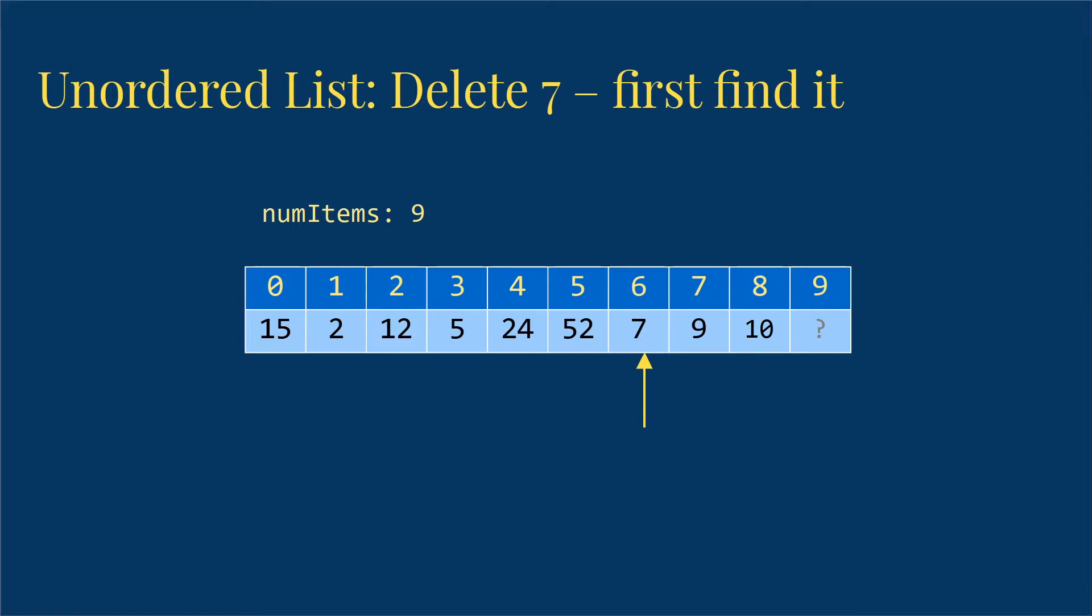In this case, the value we want to delete is at index 6. So now I need to figure out how to actually delete the value. But what does that mean? I could replace it with some value that tells me this spot isn't in use, but it's not clear what that value would be in general.